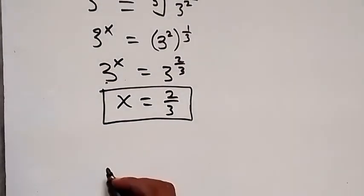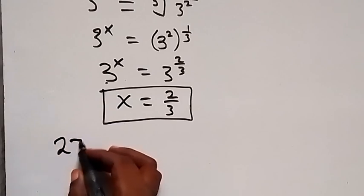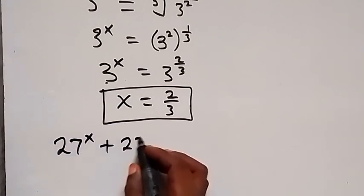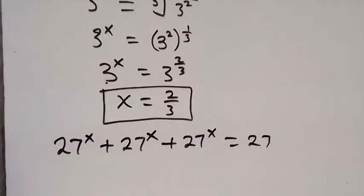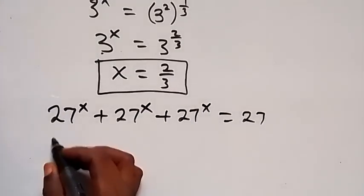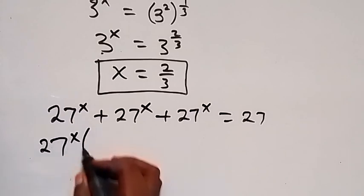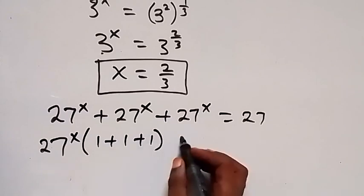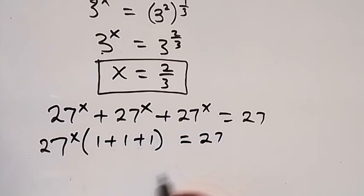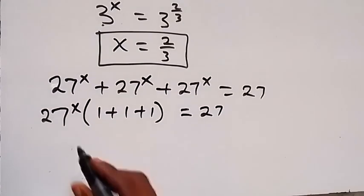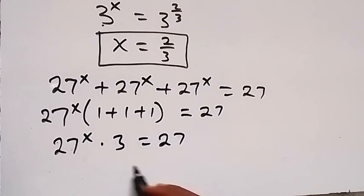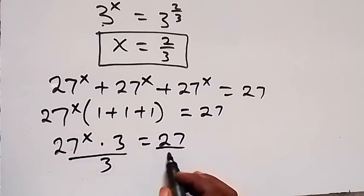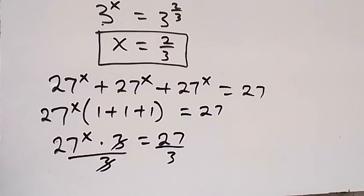We can also handle the problem in another way. We are given 27 raised to power x, plus 27 raised to power x, plus 27 raised to power x, equals 27. We factor out 27 raised to power x, giving 27 raised to power x times 1 plus 1 plus 1, which is 3, equals 27. Now divide both sides by 3 — the 3s cancel.